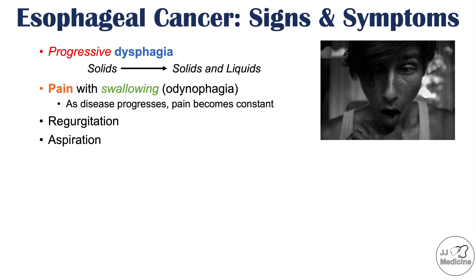Due to regurgitation, food can be aspirated — going down into the trachea and lungs. Because GERD is a common risk factor for adenocarcinoma, patients often have a past history of long-standing reflux and may present with GERD symptoms as well.